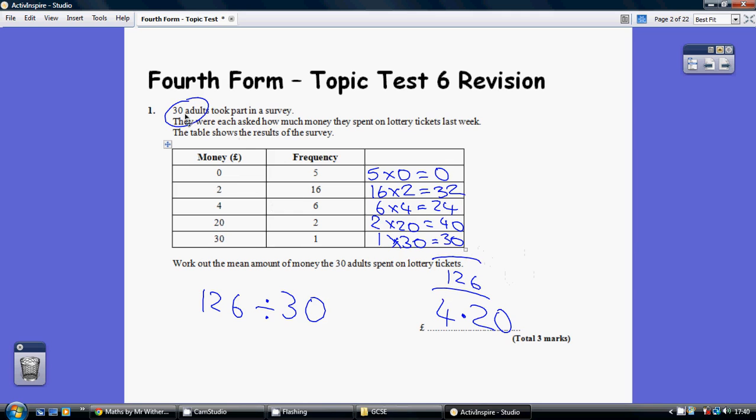That spent across 30 adults is given twice. But if you hadn't noticed that, you could have added up the frequencies, that would also have equaled 30. So £126 spent between 30 adults, so you do 126 divided by 30 and you can see that each adult spent £4.20.